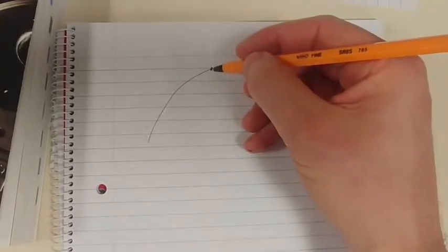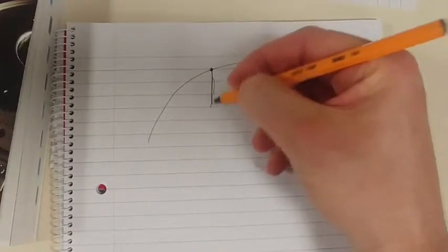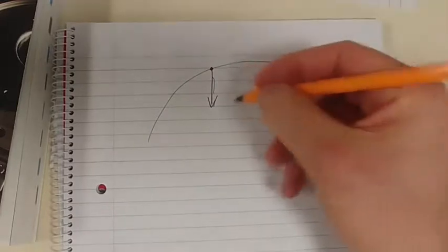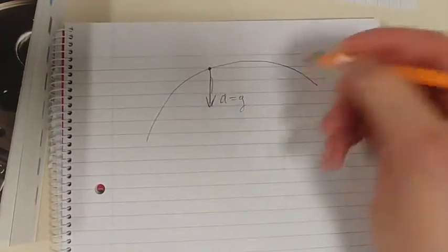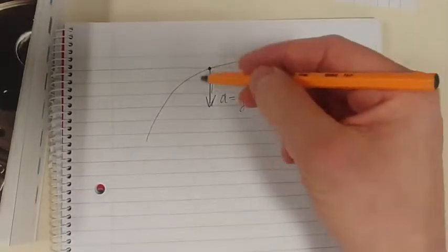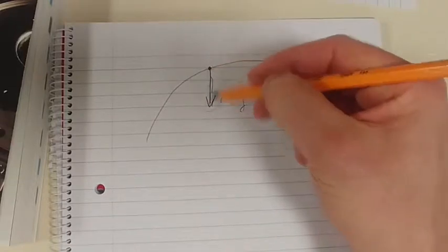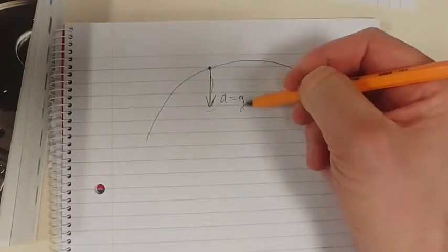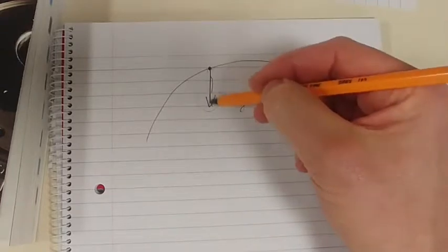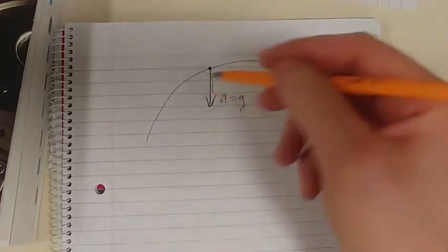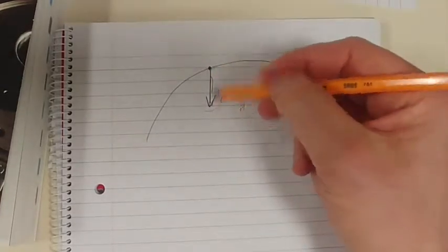We know that the resultant acceleration is straight down and a equals g, right? That's your gravity. This is my resultant acceleration and the magnitude is gravity, the g, and the direction is straight down. So we've got that acceleration vector right there.